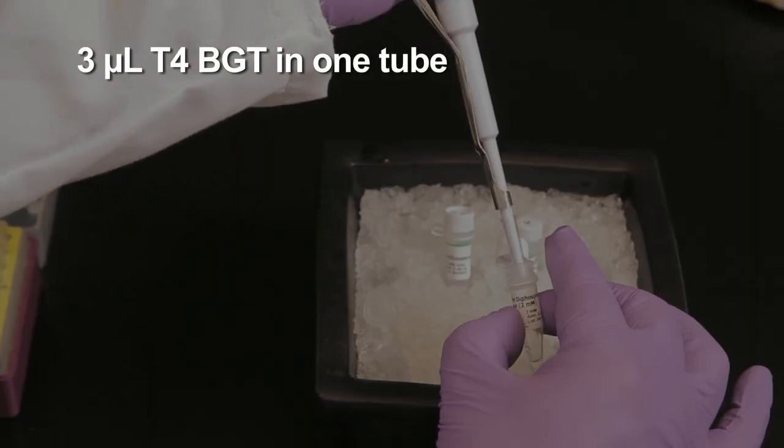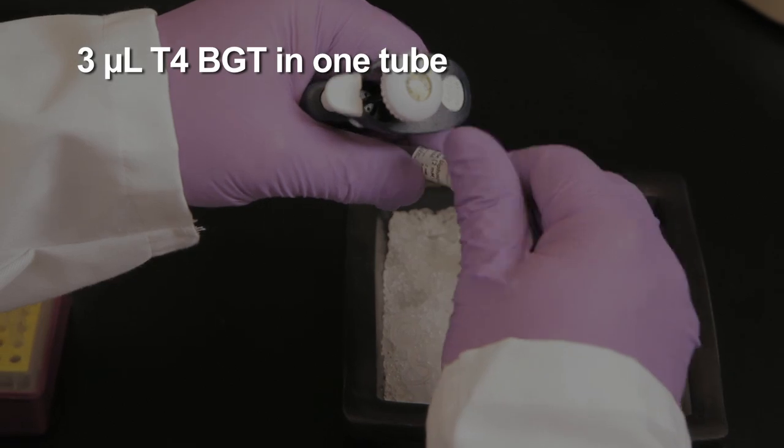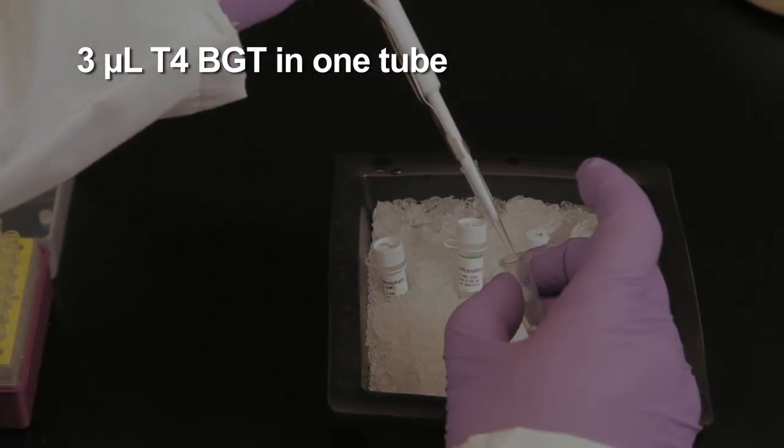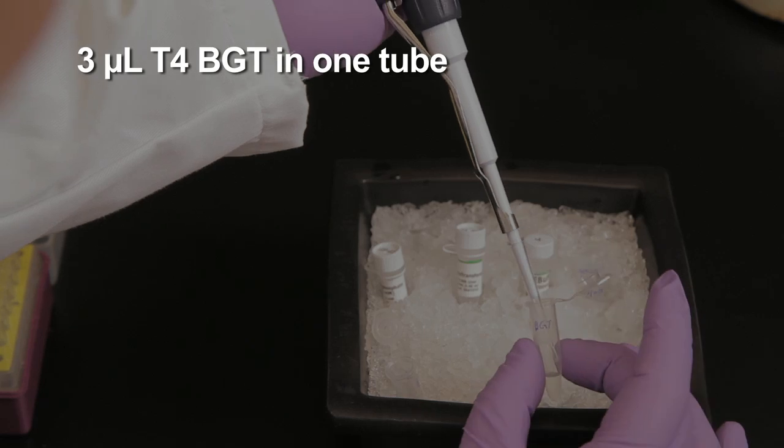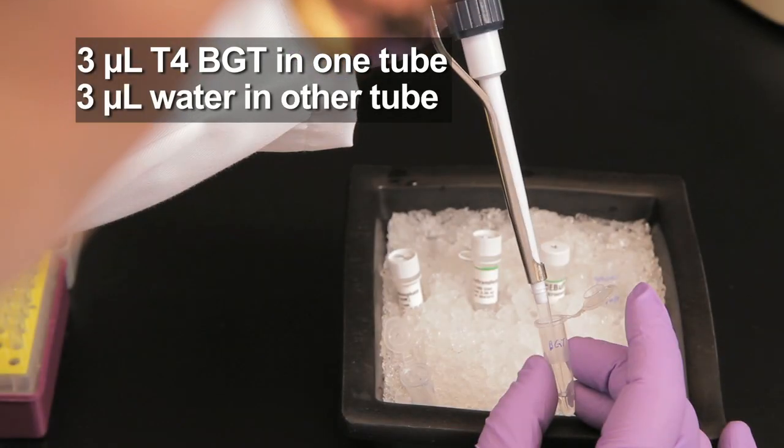Then add 30 units, or 3 microliters, of T4 beta-glucosal transferase to one tube. Mix well by gently pipetting up and down. Do not add the T4-BGT to the second tube as it is the control reaction, but be sure to add 3 microliters of water.